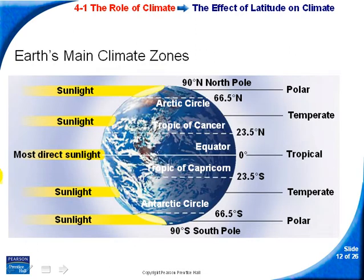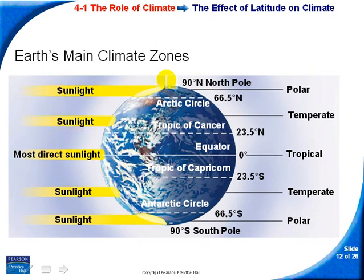Here's another view — around September 21st or March 21st, at the equinox, the Earth has essentially no tilt. Every point on the globe gets the same amount of sunlight that day. You can see the light hits at a very low angle at the poles, whereas sunlight is very direct at the equator.